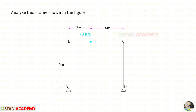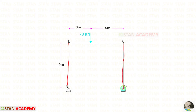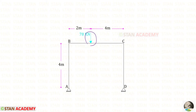Hello everyone. Today we are going to analyze this frame using the consistent deformation method. In this frame, columns AB and CED have the same height of 4 meters. The beam BC has a length of 6 meters. There is no load in the columns. In beam BC, there is a concentrated load of 78 kN acting at a distance of 2 meters from B.